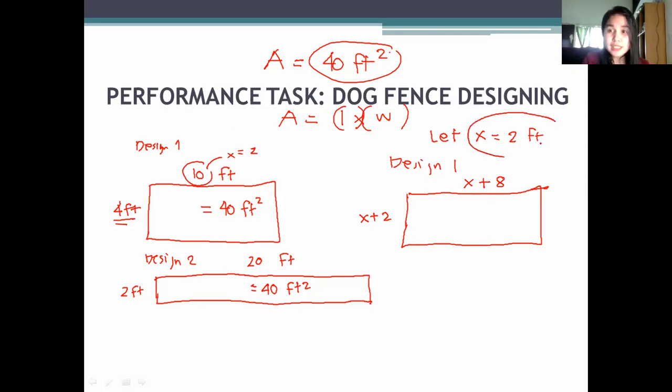You need to tell me what is the value of your x. For design number 2, it's 2. Remember my width is 2 feet. So my width can be x. Then what will be my length? x plus 18. Remember the area should be 40 feet.